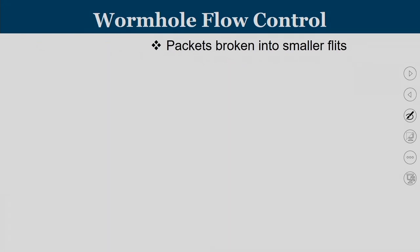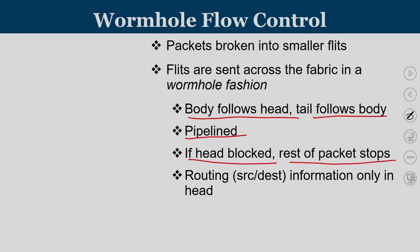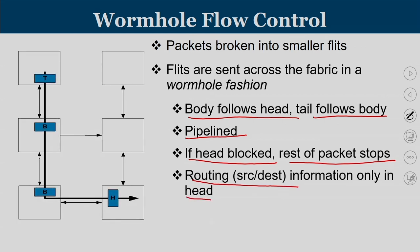Another category typically followed in network on chip is wormhole flow control. Packets are divided into smaller units called flits. Flits are sent across the fabric in a wormhole fashion — body flits follow the head flit, tail follows body flits, and this happens in a pipeline. Even if the head is blocked, the rest of the packet is also going to stop. The routing information is available only in the head flit. Once the head comes, the body flits and other flits slowly follow. The flits of the same packet are scattered across multiple routers.